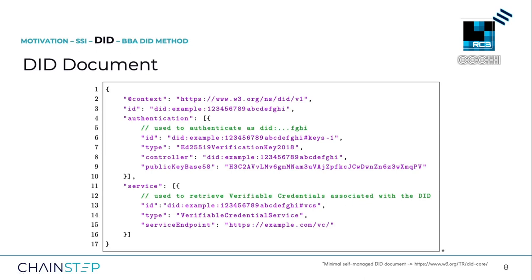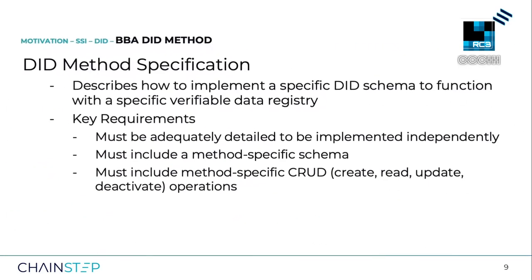Every DID method follows its own specification, which describes how to implement a specific DID schema to function with a specific verifiable data registry. Each specification has to fulfill some basic requirements, including three key ones: it must be adequately detailed to be implemented independently so that a third party can implement a resolver based on this specification alone; it must include a method-specific DID schema; and it must include the method-specific CRUD operations, which describe how a DID can be created, read or resolved, how the DID document and DID controller can be updated, and how the DID can be deactivated.